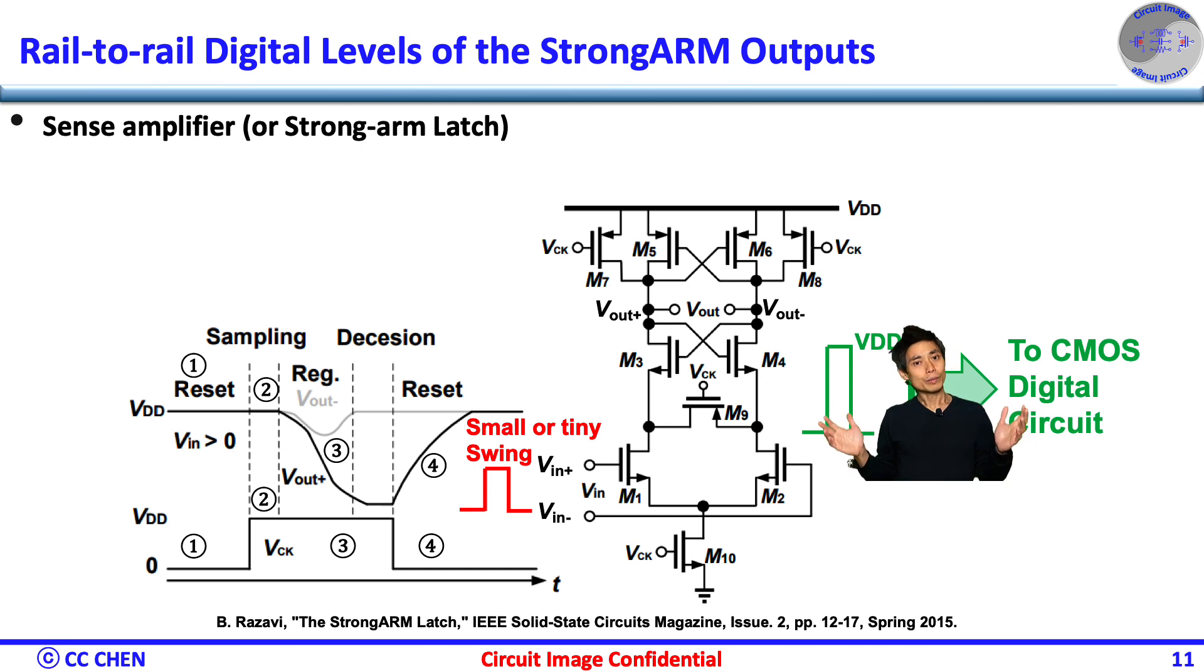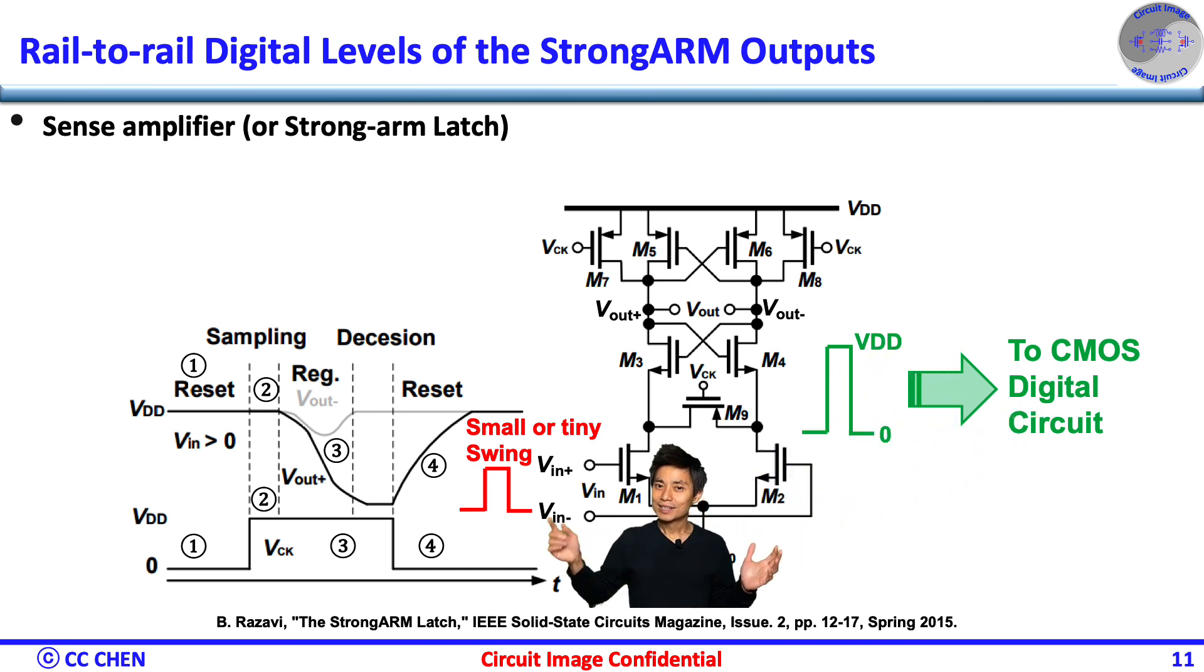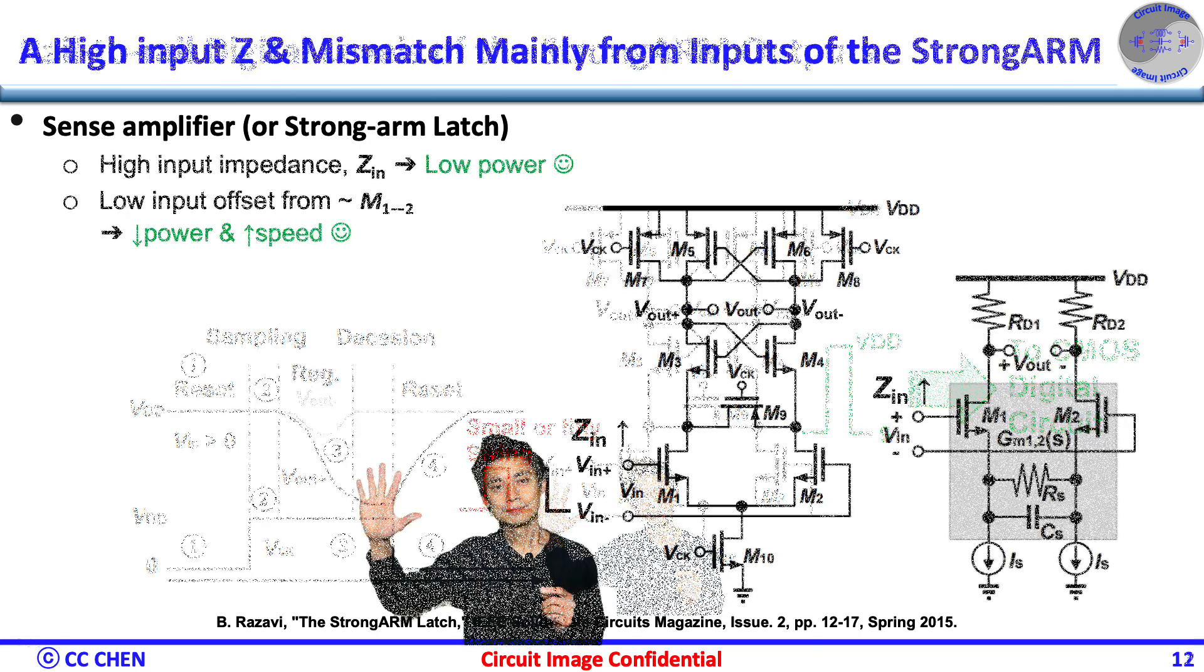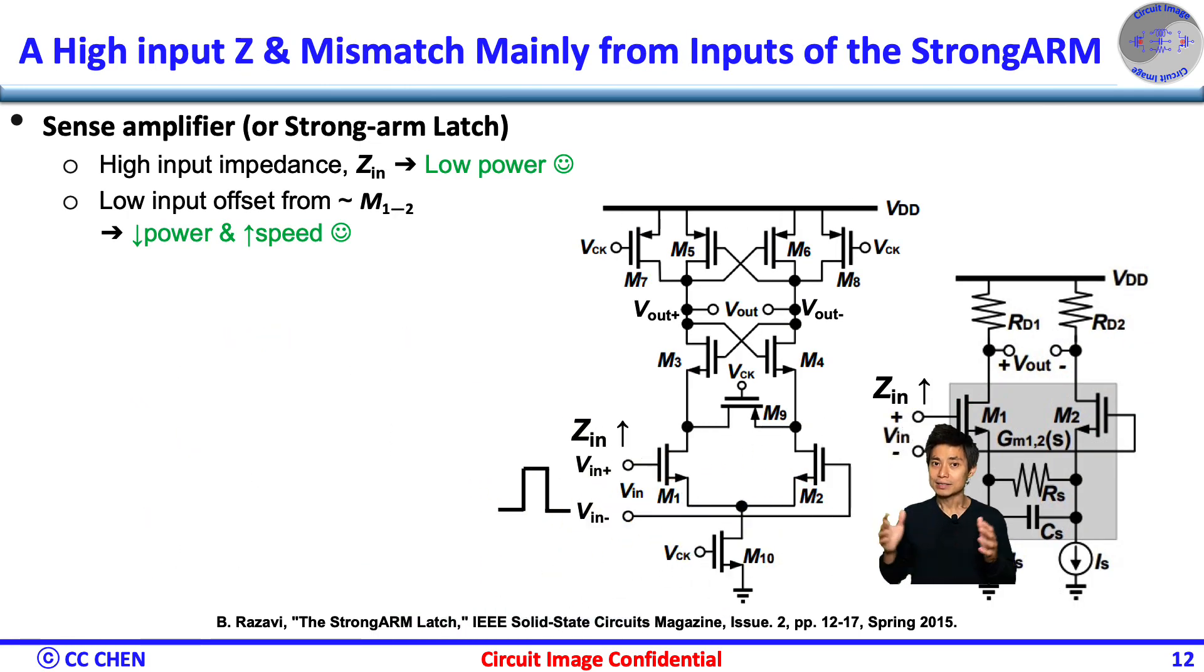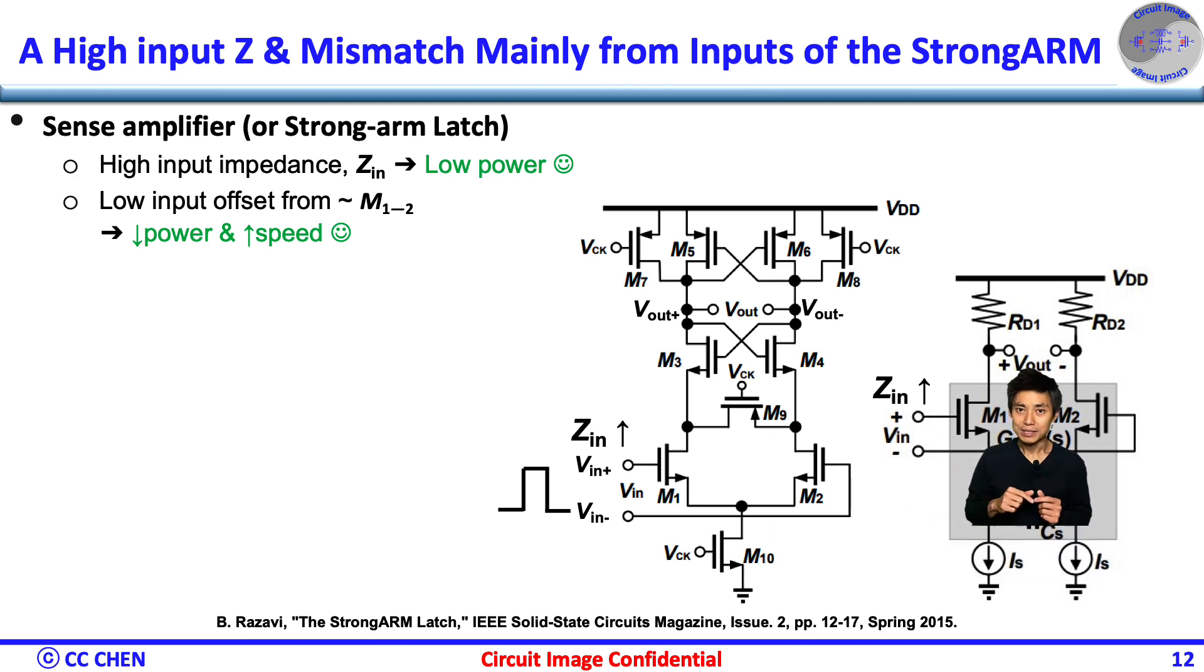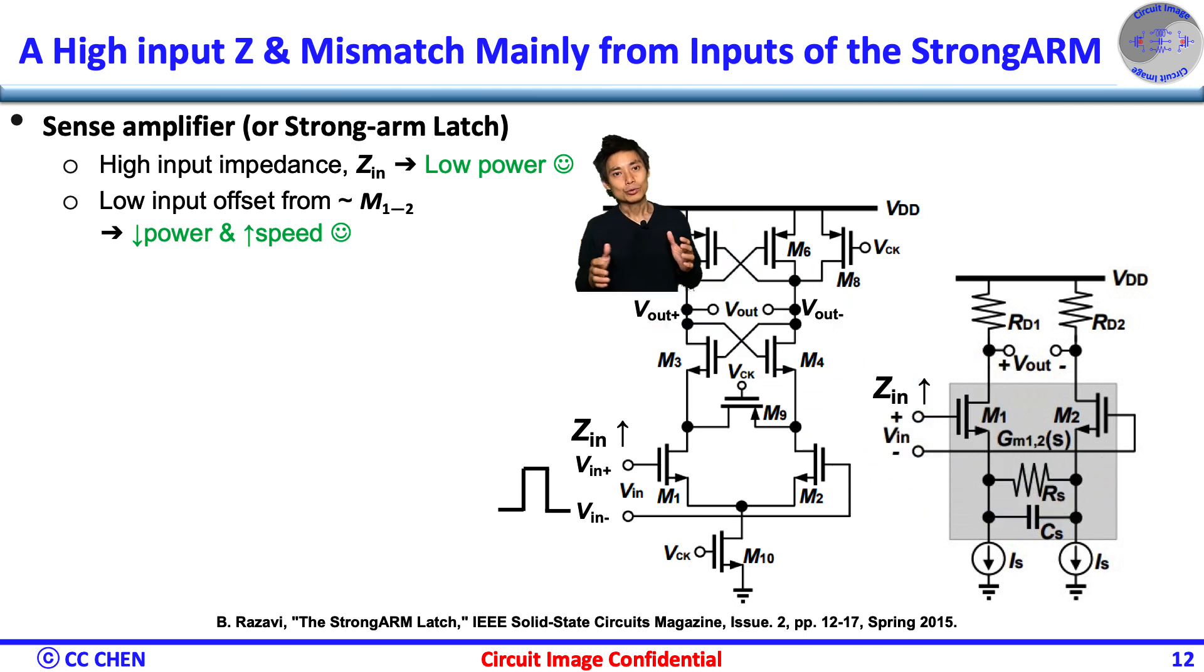What are the remaining good features? First, think about the input for five seconds. Great, the input differential pair is like a CMOS circuit to have high input impedance. Therefore, any preamplifier connected to it will not consume as much power as others.